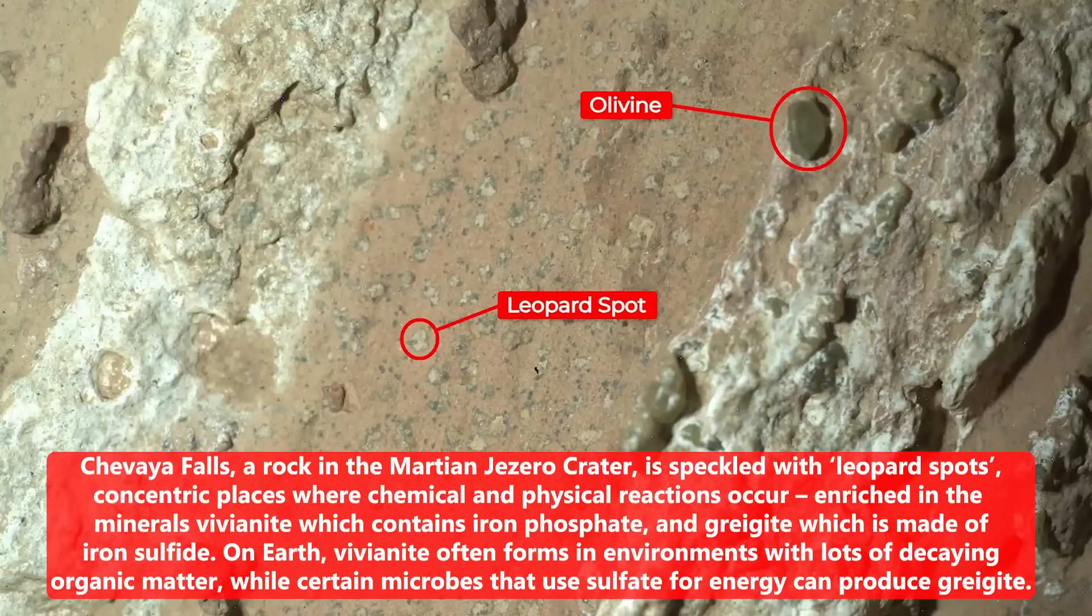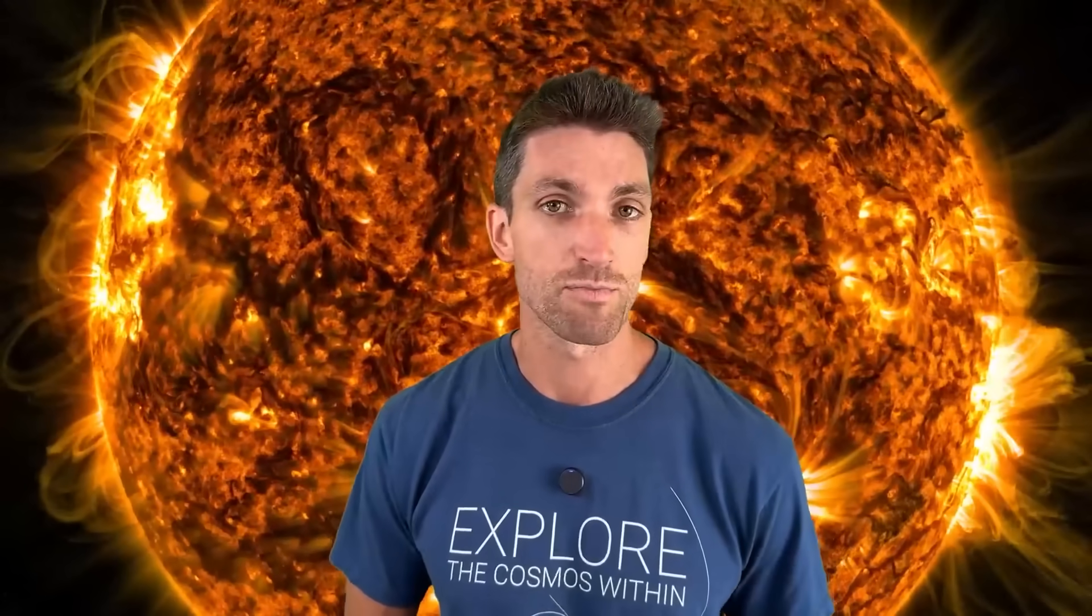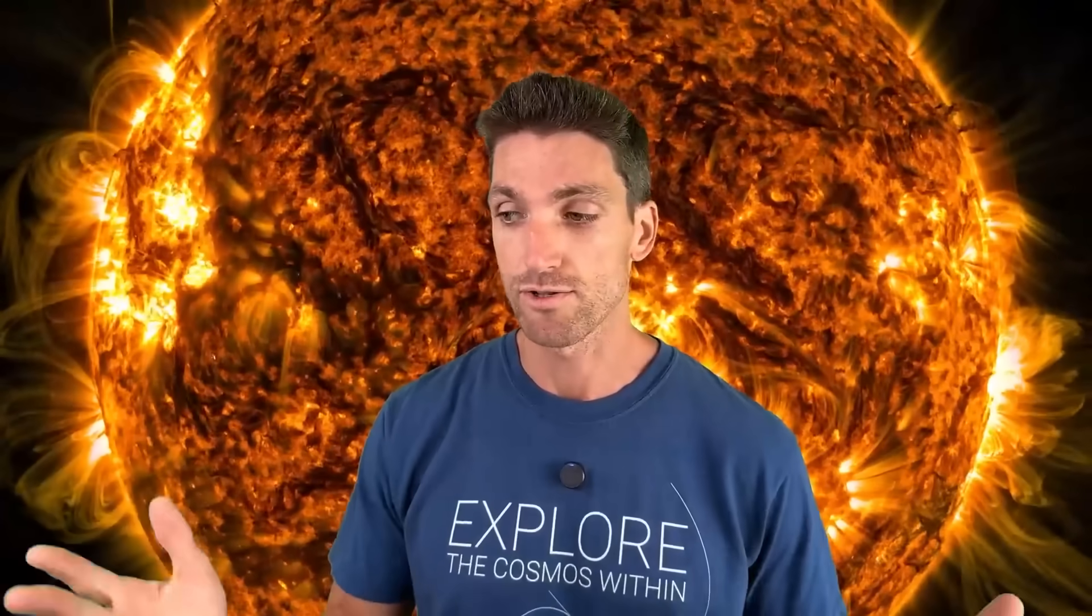We just recently found very strong evidence of there being microbial life in the past on Mars, based off of some mineralogical and geologic data. And perhaps there's actually life spread out across the solar system on comets and asteroids and moons and the other planets. Perhaps life is everywhere. We don't know.